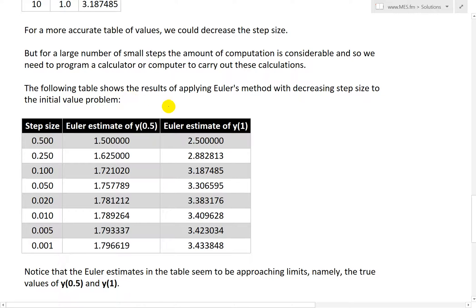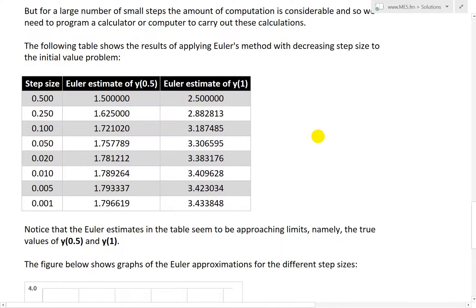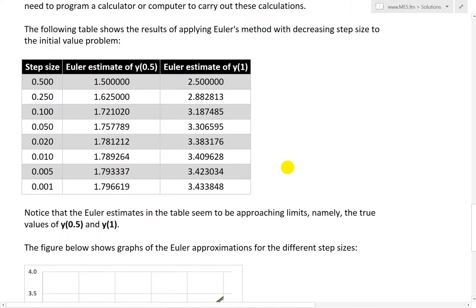And basically, the following table here shows the results of applying Euler's method with decreasing step size to the initial value problem above. So if we keep decreasing here, so an estimate of Y of 0.5, first step size 0.5, like this, we get 1.5. And then, as you get really, really, really small, 0.001, we're getting close to the exact answer, 1.7669. For Y of 1, or X is 1, we get about 3.433. As you can see, it gets more and more accurate.